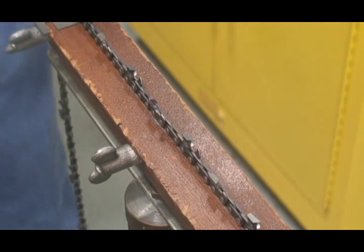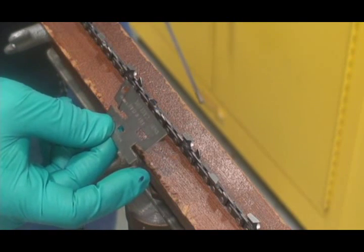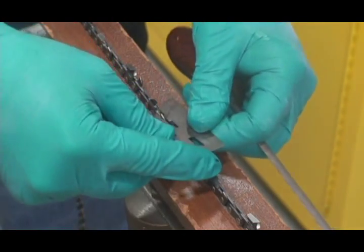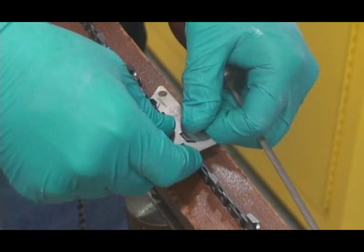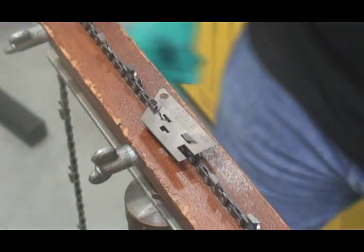Always point the beveled edge of the file plate toward the saw motor to make sure the file plate is oriented correctly. Using the small cutout as a guide, place the file plate on the correct cutter to begin sharpening. For demonstration purposes, the right hand cutter will be filed first.